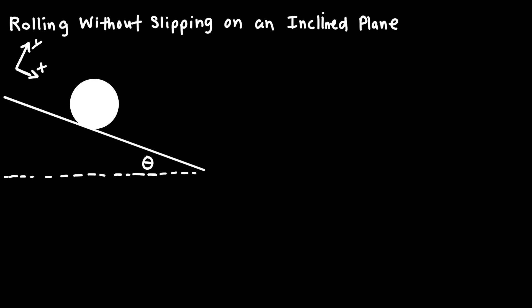Now we're going to draw in some forces acting on this object. First, acting at the center of mass, the gravitational force pulls straight down, and I'll label that mg. There's a normal force exerted at the contact point between the object and the surface, pointing perpendicular to the plane — I'll label that N. And then there's a frictional force at that same contact point, pointing opposite the direction of motion. So if the object is rolling down the ramp, the frictional force points up the ramp. This is a static frictional force.